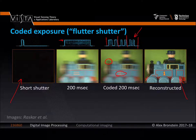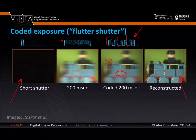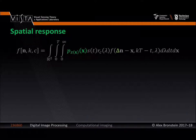We used a very mild modification — in this case a ferroelectric shutter in front of the aperture — and then reconstructed the image. This is a nice result showing that with small hardware changes and computation, we can overcome motion blur while maintaining good SNR.